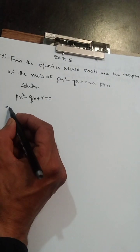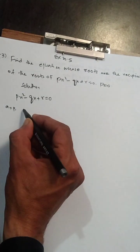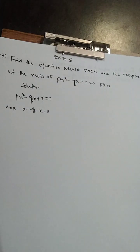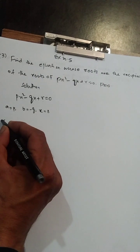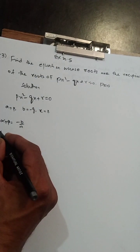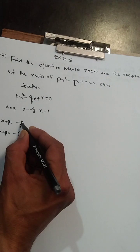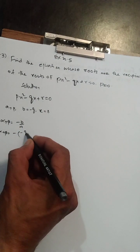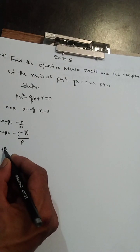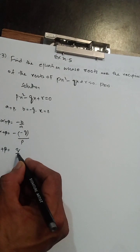Sabse pehle hum yahan se a, b, c ki value banayenge. x² ki side wala number a ki value, x ki side wala number b ki value, aur without x wala c ki value hoga. Uske baad sum of roots find karenge jiska formula hai minus b upon a. Alpha plus beta mein minus ki nishani same rahegi, b ki jagah minus q aur a ki jagah p rakhenge, to minus into minus = plus, so alpha + beta = q upon p.